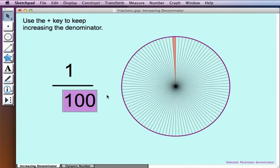So we see, in a very visually compelling way, that as the denominator gets larger, the shaded portion of the circle gets much, much smaller.